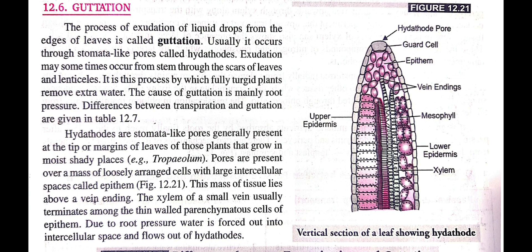edges of leaves. It usually occurs through stomata-like pores called hydathodes. Just as gaseous exchange occurs through stomata, similarly guttation or exudation of liquid drops occurs through the edges of leaves by a special type of pore called hydathodes. Exudation may sometimes occur from the stem through scars of leaves or lenticels.